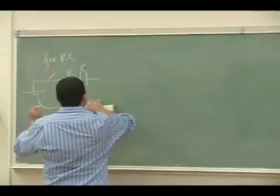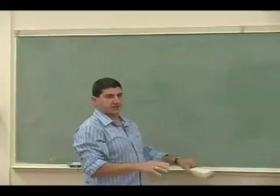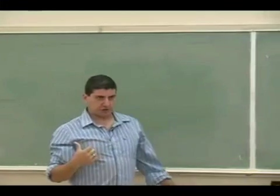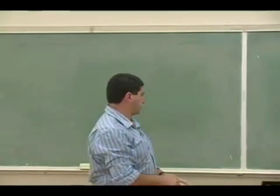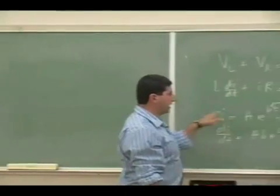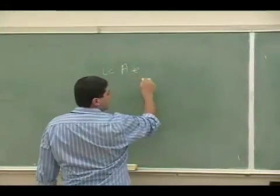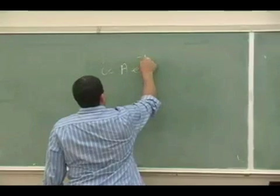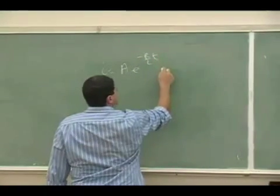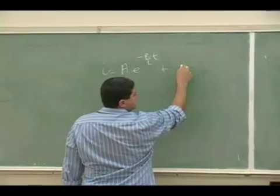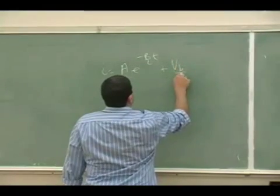So this is the same way that we did the solution of the other differential equation, right, with the RC circuit. So then you get I must be equal to A, E to the B was going to be negative R over L, T, plus C is going to be VB over R.